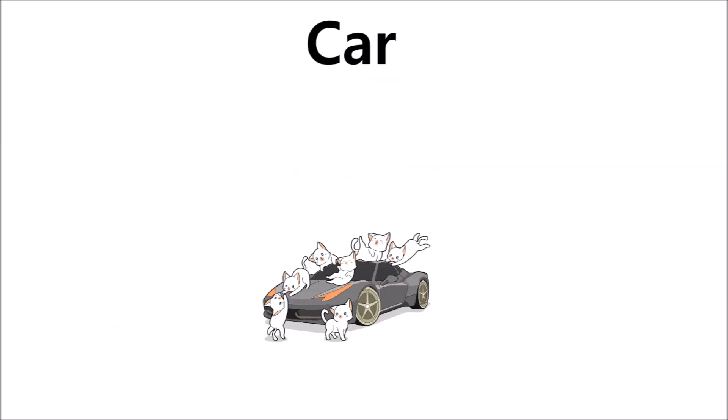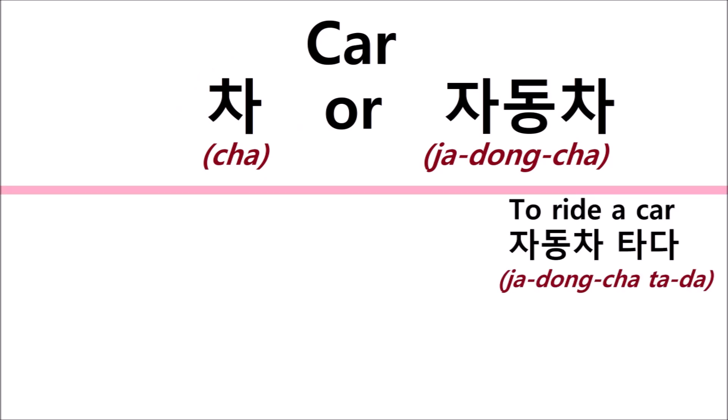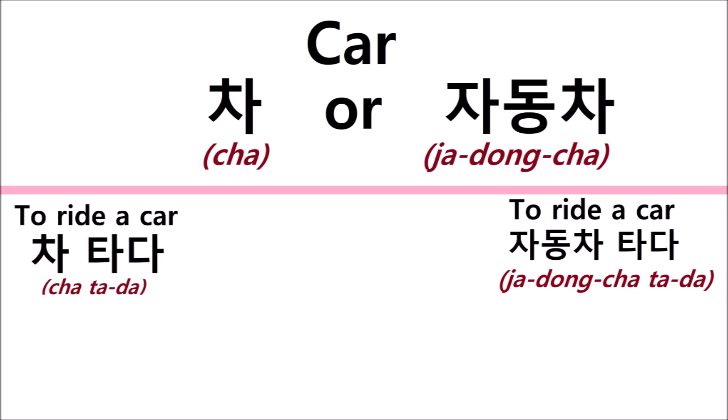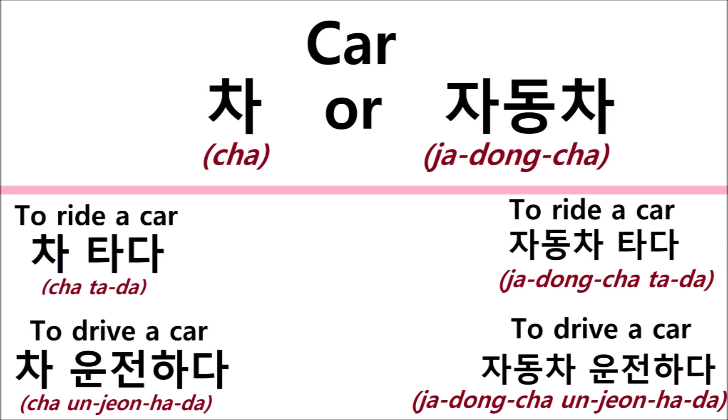Next vehicle — it's an easy one. Car is 차, or 자동차. But 차 is more modern, cool, and casual. You can ride a car — 자동차 타다, or 차 타다. Or you can drive a car — 자동차 운전하다, or 차 운전하다.